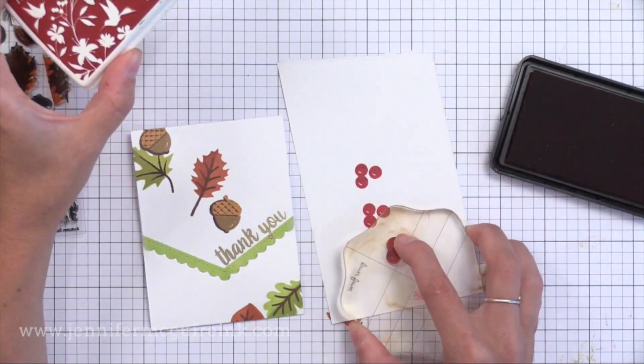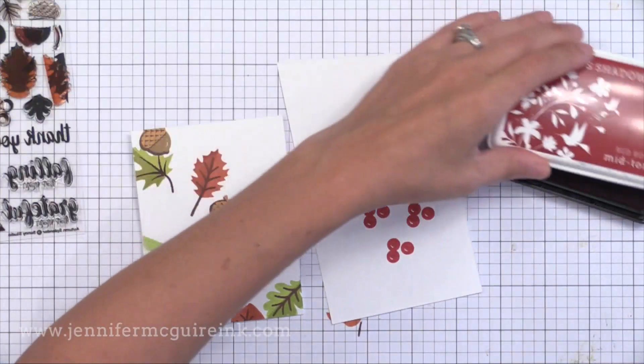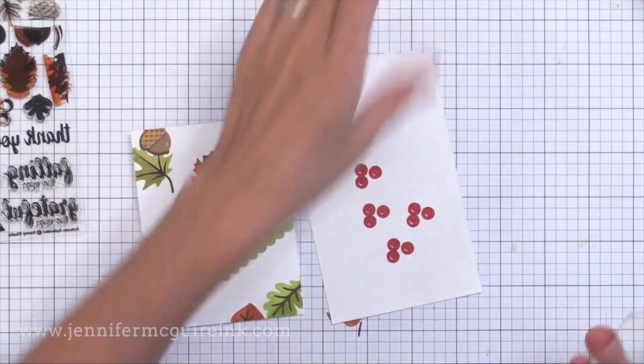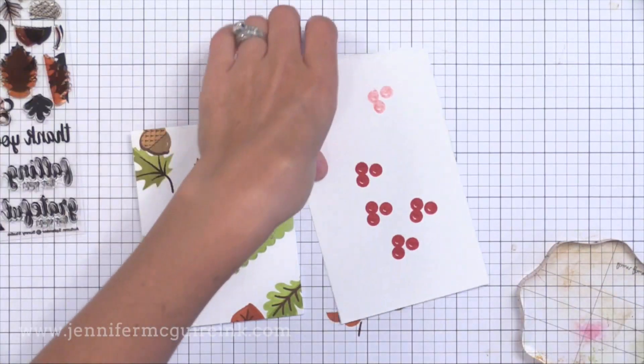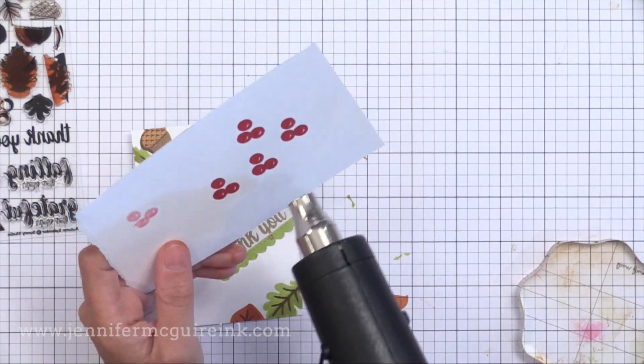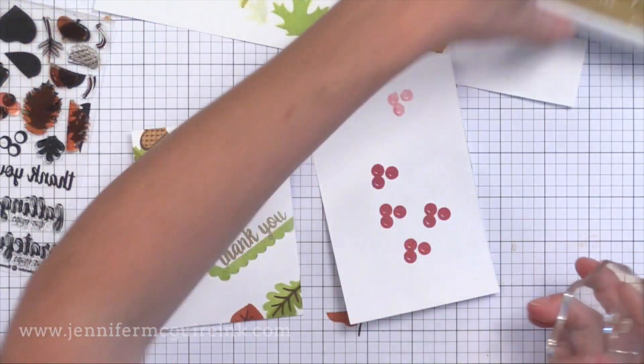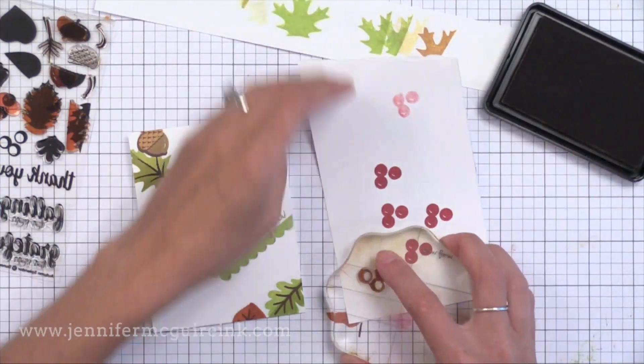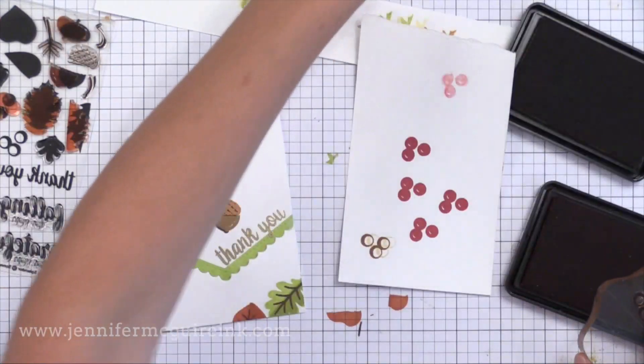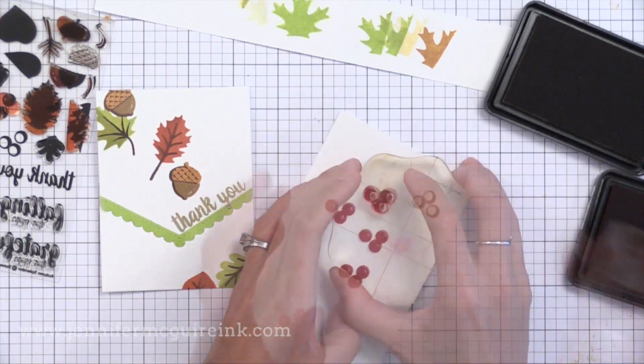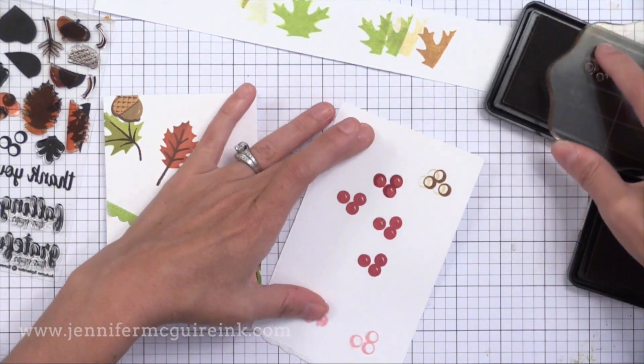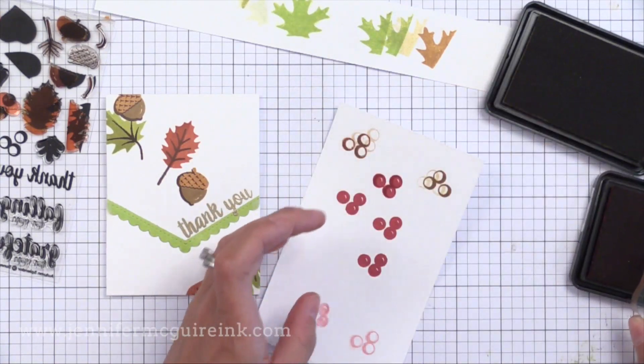Now that I have most of my leaves and such done, I wanted to add some berries but I wasn't sure where so I decided to stamp them separately and cut them out and add them exactly where I wanted them. That would prevent me from making any mistakes. So I did the first layer of stamping with a red ink. Now I'm going to heat set that. Now for the second layer, I'm going to ink up first with brown ink, stamp off a little bit, then ink up with the red and do the second layer. And that will result in a slightly darker red color for that second layer.